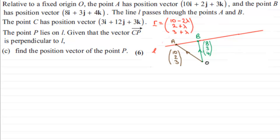And the point P lies on L. Given that the vector C to P is perpendicular to L, what we have to do is find the position vector of the point P. So, if you haven't given this a go and you want to try it now, just pause the video, come back when ready, and I'll work through the solution.